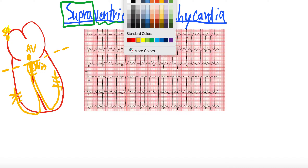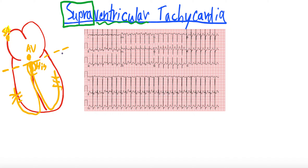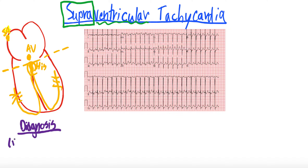So why is that relevant? What does that mean? Above the bundle of His, supraventricular essentially means you're going to have a narrow QRS. Something that is required for the diagnosis of supraventricular tachycardia is a narrow QRS. I can link to one of our videos on intervals on 12-lead EKG — I'll put it up in the top right corner — but a narrow QRS is a QRS less than 120 milliseconds.